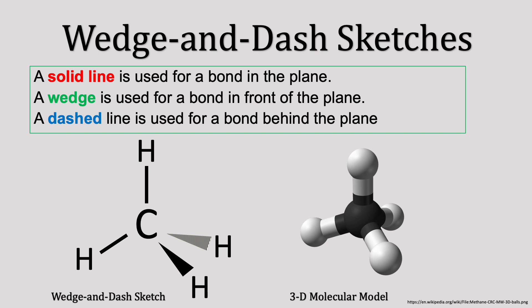The wedge and dash model is on the left, and I've included the 3D model on the right for reference. Methane has a tetrahedral geometry, which is evident in the 3D model. We can recreate this on paper using the wedge and dash sketch.